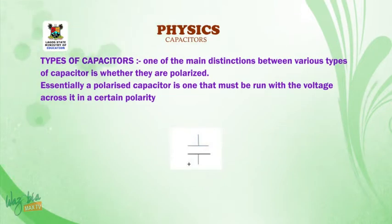Type of capacitor. One of the main distinctions between various types of capacitors is whether they are polarized. Essentially, a polarized capacitor is one that must run with the voltage across it in a certain polarity.